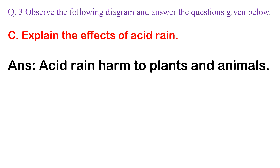C. Explain the effects of acid rain. Answer: Acid rain is harmful to plants and animals.